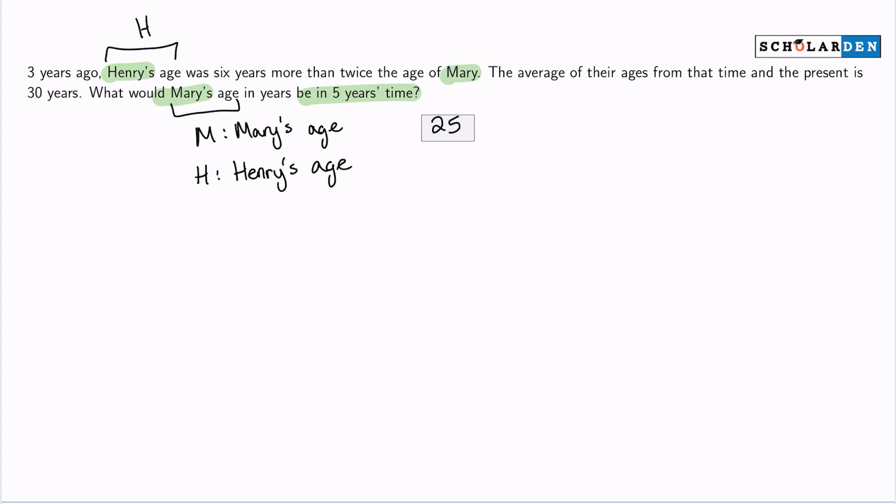Now pay attention because this is going to get a little ugly. Let's highlight that first sentence: Three years ago, Henry's age was six years more than twice the age of Mary. Watch this. I know that 'was' is just the past tense of 'is.' And if I'm writing an equation, is, was, will be, yields, is the same as, equals—all of that means equals.